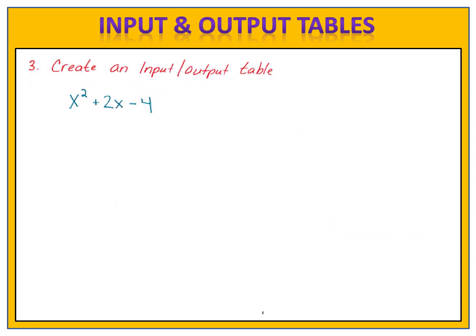What about a more challenging example? What if I want to create an input and output table for this expression, x squared plus 2x minus 4? Let's create a table with the left column for the inputs and the right column for the outputs. And I'll give you the numbers that I want you to use for the inputs, and then we can calculate the outputs. Inputs will be negative 2, negative 1, 0, 1, 2, 3. And our inputs don't have to be integers. They could be fractions or decimals. So let's do 1 decimal, 3.5.